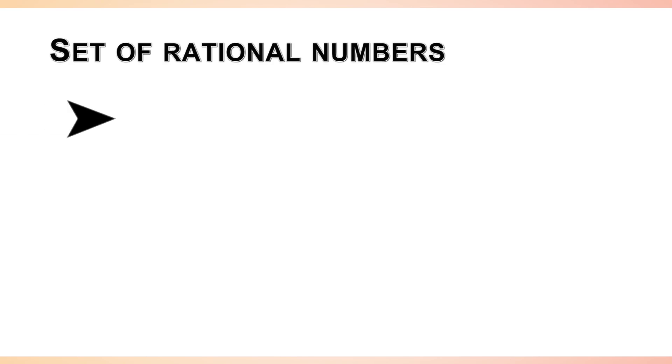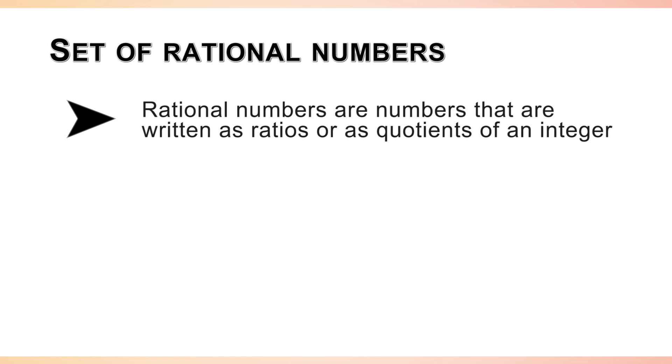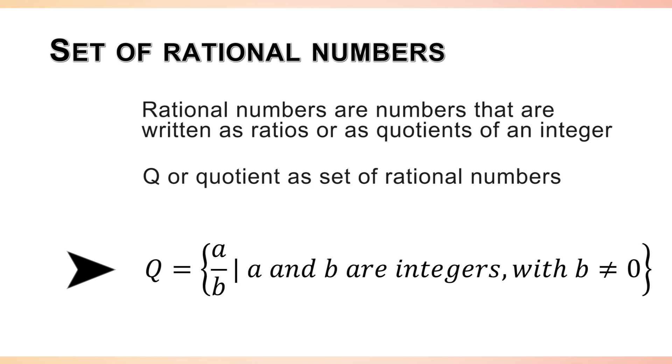The first subset is the set of rational numbers. Rational numbers are numbers that are written as ratios or as quotients of an integer. We use the letter Q or quotient to name the set of rational numbers and write the set in the set builder notation as follows: Q is equal to the set containing A over B such that A and B are integers with B is not equal to 0.